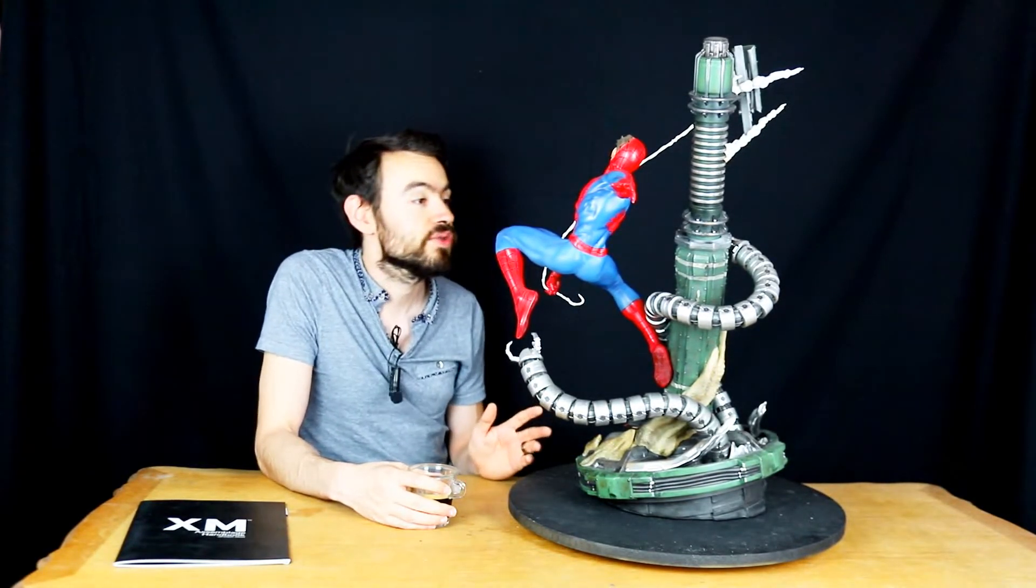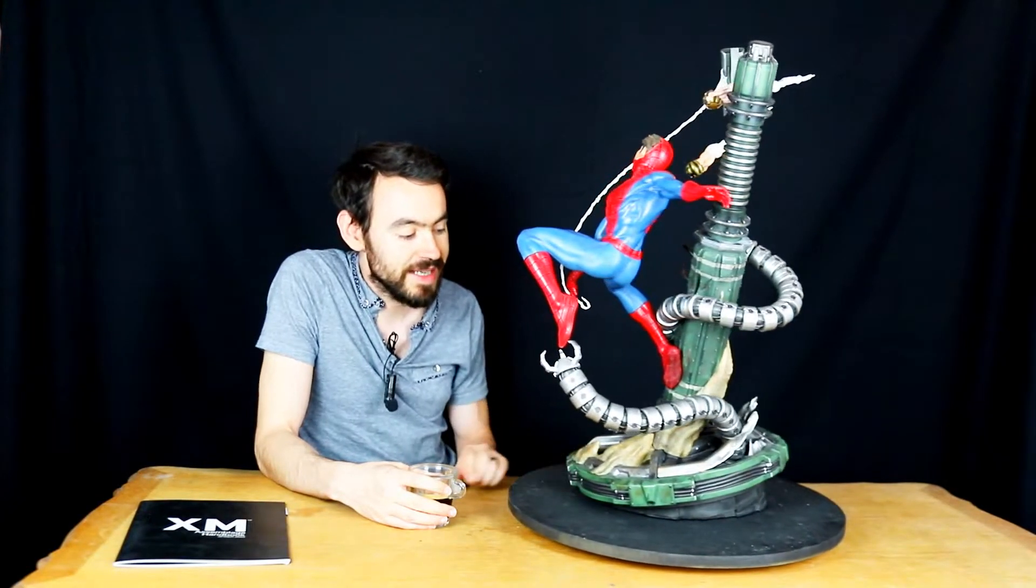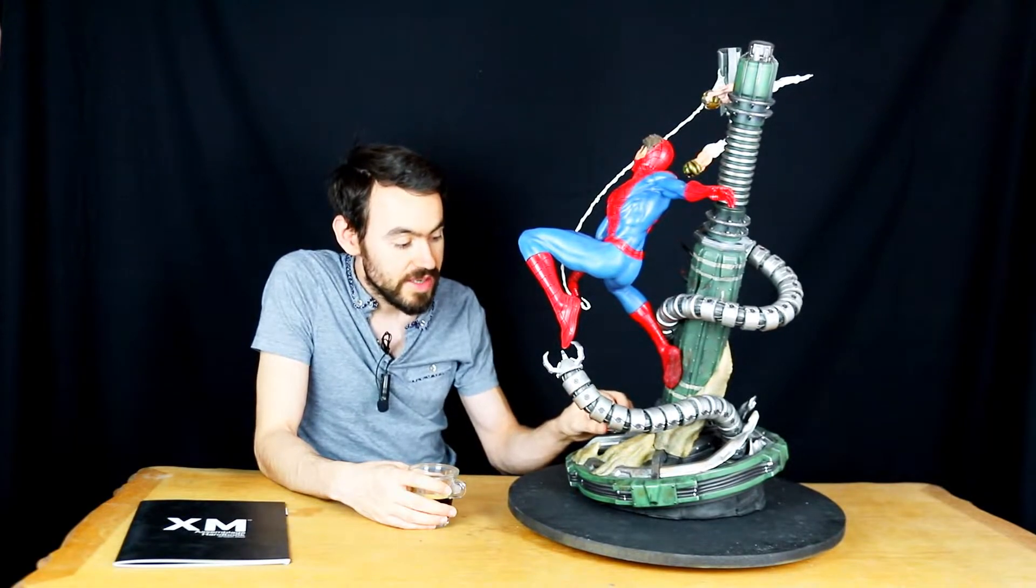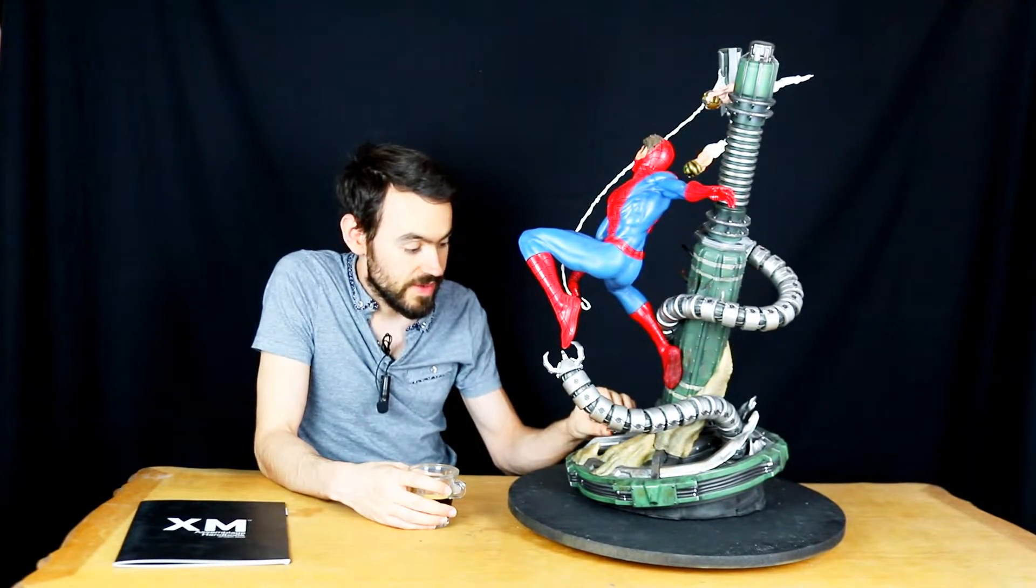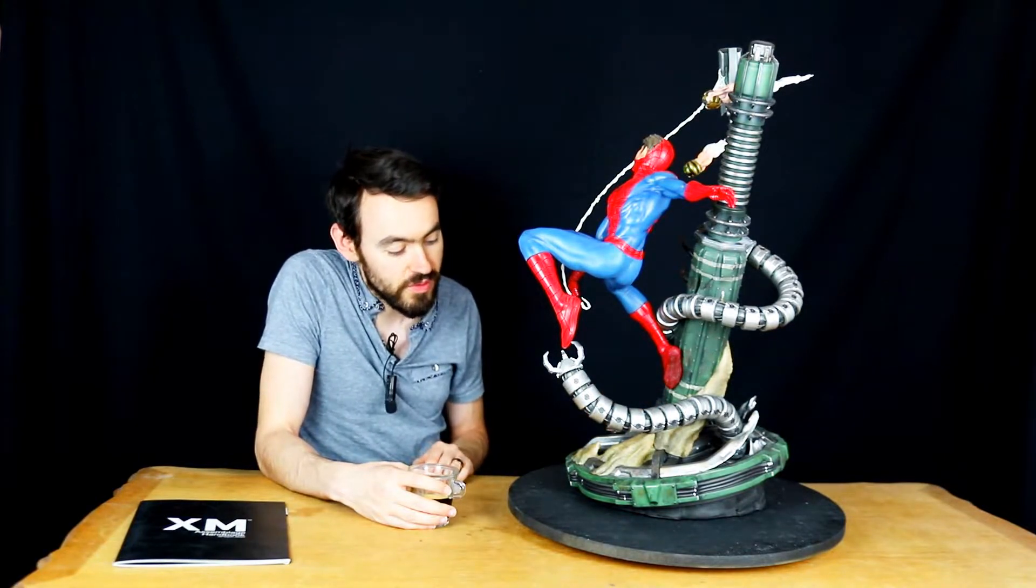Qui sont très certainement censés symboliser Sandman, donc on a en fait 4 Sinister Six qui viennent composer ce socle. Peut-être même plus d'ailleurs, peut-être que je ne vois pas d'autres éléments pour le coup. Voilà donc on a une base vraiment type centrale énergétique avec les câblages.